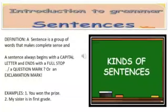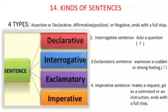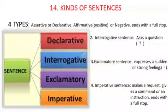Now we will be seeing the kinds of sentences or the types. There are four types of sentences. Assertive or declarative. Further, it can be affirmative or negative, and assertive sentences always end with a full stop.